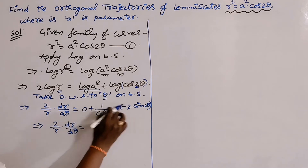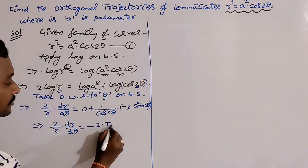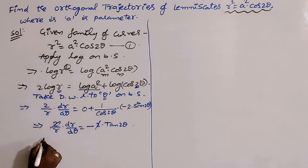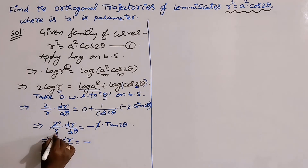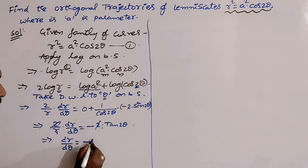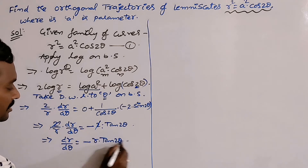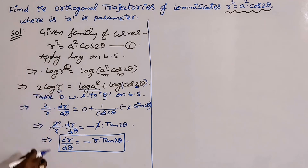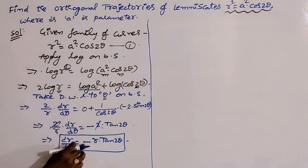So 2/r · dr/dθ = -2·sin2θ/cos2θ = -2·tan2θ. The 2s cancel, giving dr/dθ = -r·tan2θ. This is the differential equation of the given family, because parameter 'a' is completely eliminated.